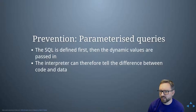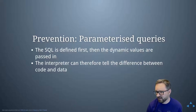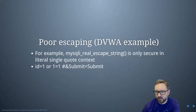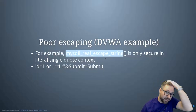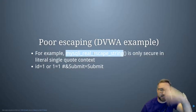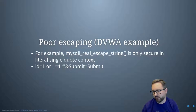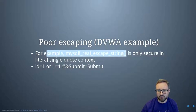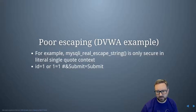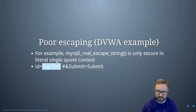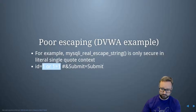With parameterized queries, the SQL is defined first and then dynamic values are passed in, so the interpreter can tell the difference between code and data. Poor escaping can happen when you use the wrong kind of escaping for the wrong context — for example, SQLite's real_escape_string is only secure in a literal single-quote context; if used outside that context, it's still insecure and won't help you.